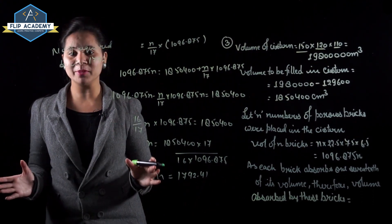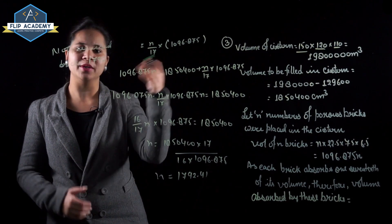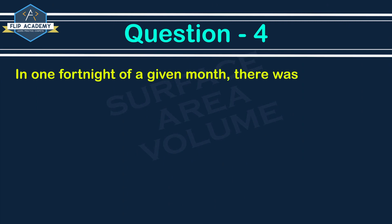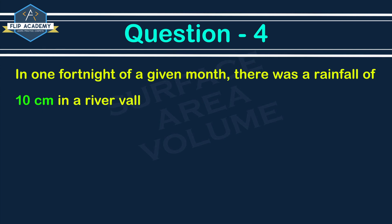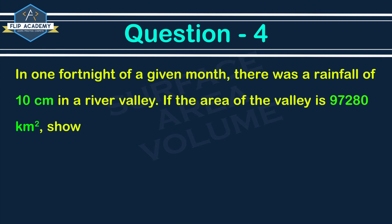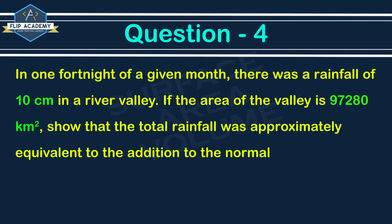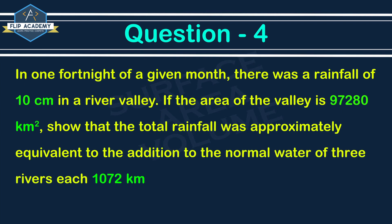1792 bricks are required to fill the cistern to the brim. Q3 is complete. Q4: In one fortnight, there was a rainfall of 10 cm in a river valley. Area of the valley is 97,280 km². Show that total rainfall was approximately equivalent to the addition to normal water of 3 rivers each 1072 km long, 75 m wide and 3 m deep.